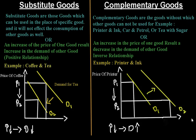On the other hand, what are complementary goods in economics? Complementary goods are those goods without which other goods cannot be used. For example, printer and ink.